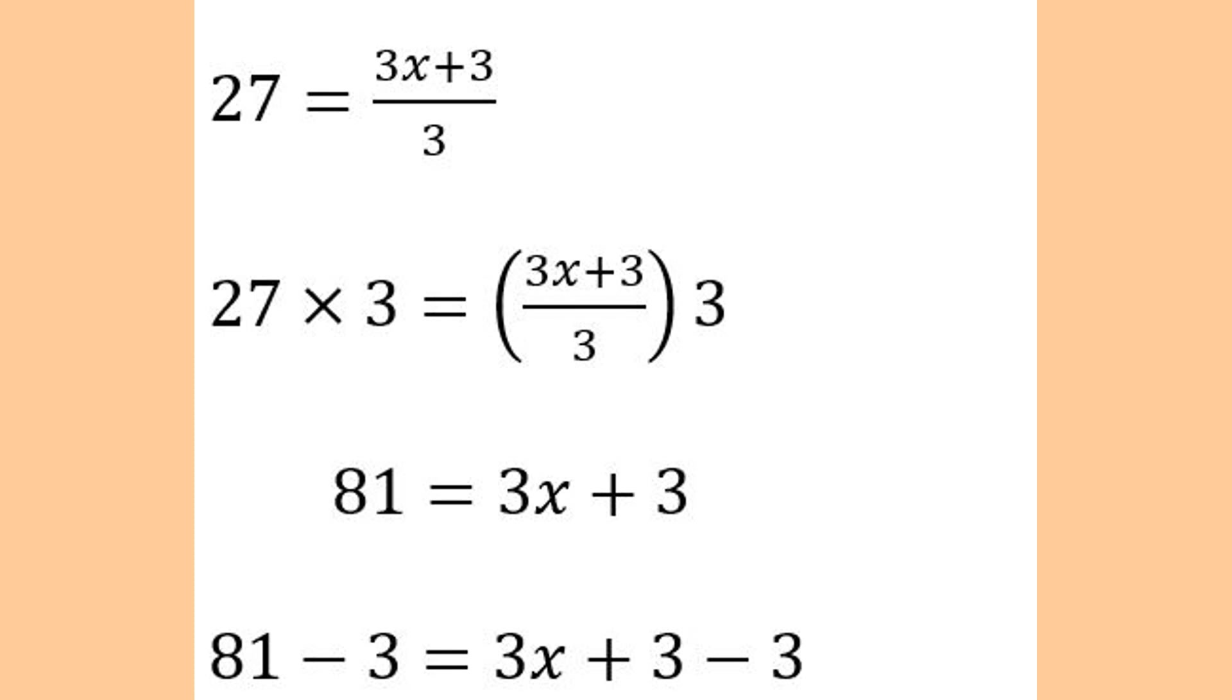When we subtract 3 from both sides, then our equation becomes 81 take away 3 equals 3x plus 3 take away 3.